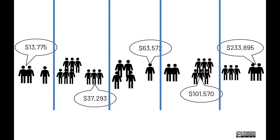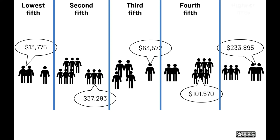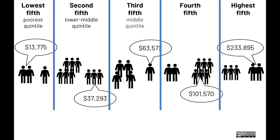Each group is called a quintile or a fifth because they represent one-fifth of all U.S. households. The Census Bureau usually calls them the lowest, second, third, fourth, and highest fifth. We might also use terms like the poorest quintile, the lower middle, the middle, the middle upper, and the richest.